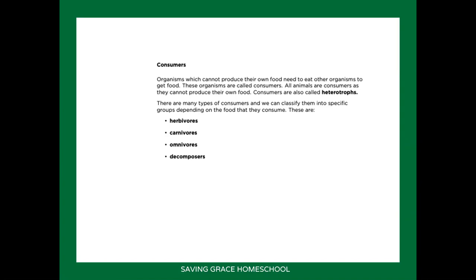Now we have consumers, which are also called heterotrophs. There are different types: herbivores, carnivores, omnivores, and decomposers. Herbivores eat your producers — so herbivores eat plants. Carnivores only eat meat, so they can eat your herbivore or your omnivore — those are animals that eat animals only. Omnivores eat both plants and animals. And then your decomposers feed on organisms that are busy dying or decomposing.